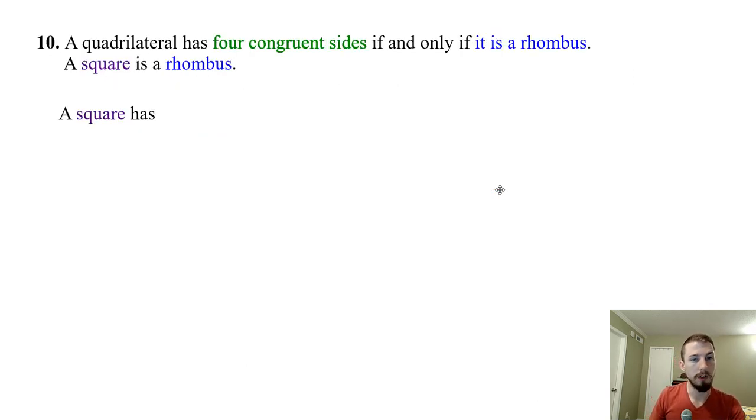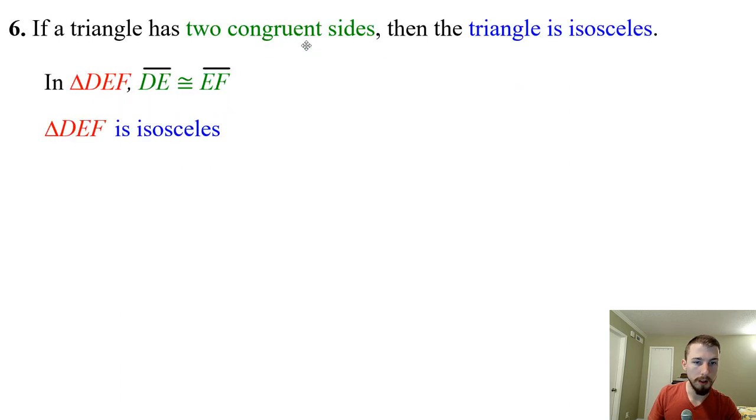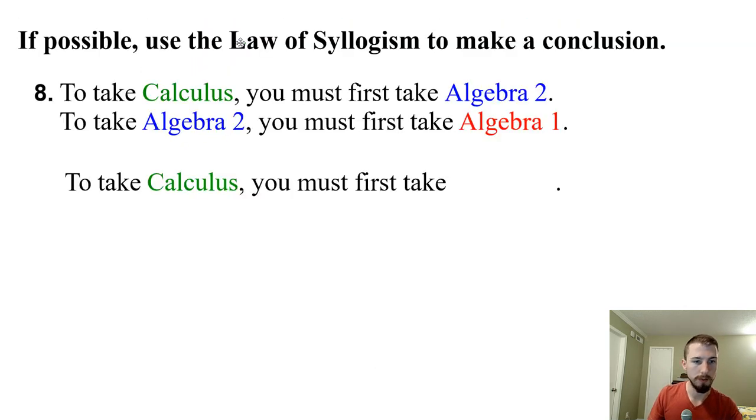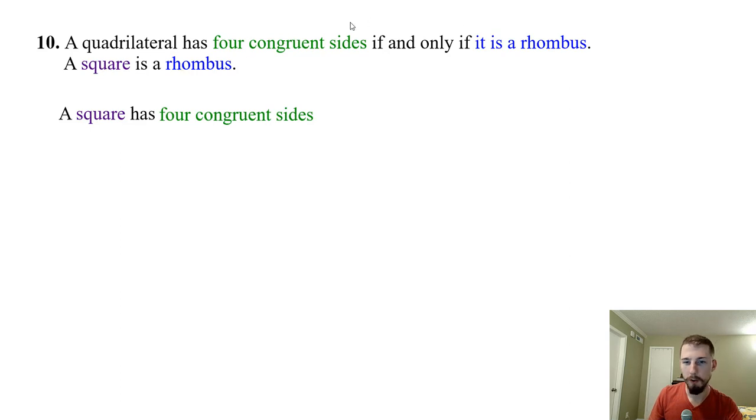Number 10. A quadrilateral has four congruent sides, if and only if. So notice if and only if allows us to go both directions. So now we might be able to use the law of detachment, even if we start out with something else. So then they tell us a square is a rhombus. Well, what do we know about rhombuses? Because it's allowed to go both directions, a rhombus is a quadrilateral with four congruent sides because this is a definition. So if a square is a rhombus and a rhombus has four congruent sides, we can conclude using the law of syllogism that a square has four congruent sides. So we are able to go both directions.